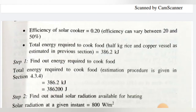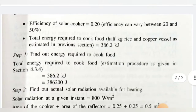The efficiency of the solar cooker we have considered is 0.20, that is 20%. Efficiency can vary from 20 to 50 percent, but we are considering the lowest efficiency of 20%. The total energy required to cook the food — half kg rice in a copper vessel — is 386.2 kilojoules.